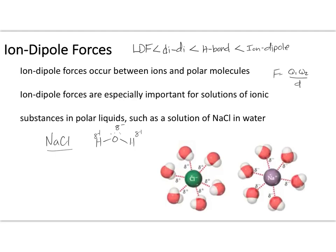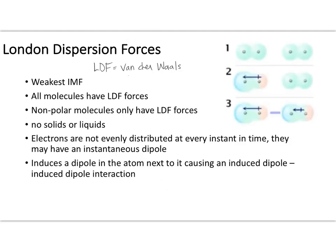Now let's talk about our final intermolecular force: the London dispersion force. London dispersion forces are also sometimes called Van der Waals interactions, depending on the text or teacher — they mean the same thing. London dispersion forces are the weakest intermolecular force, but all molecules have them. However, non-polar molecules only have London dispersion forces as their intermolecular forces. In polar molecules, we don't focus on London dispersion forces because they contain stronger IMFs such as dipole-dipole or hydrogen bonding, which contribute more heavily to properties like boiling point or melting point.